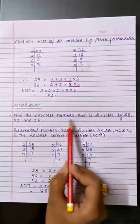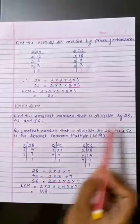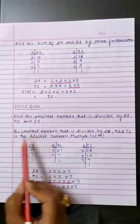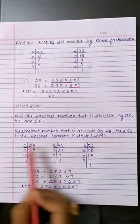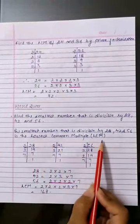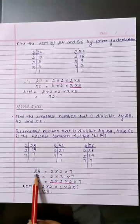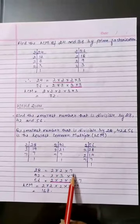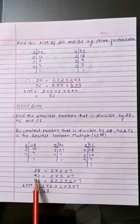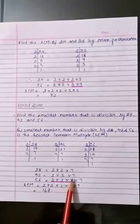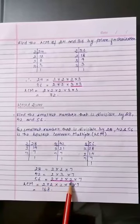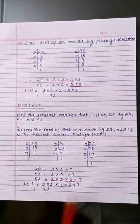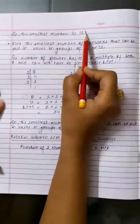Word sums. Find the smallest number that is divisible by 28, 42 and 56. The smallest number that is divisible by 28, 42 and 56 is their least common multiple. The LCM is 168. So 168 is the smallest number.